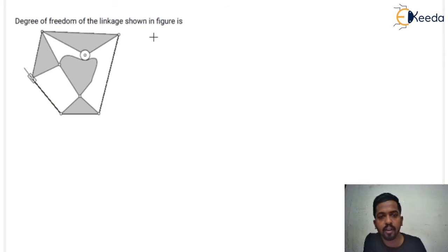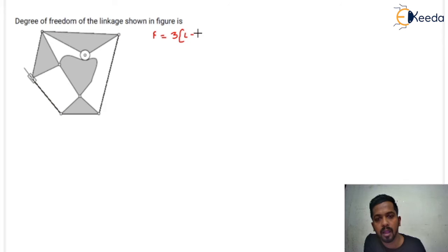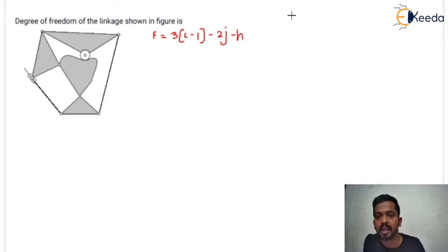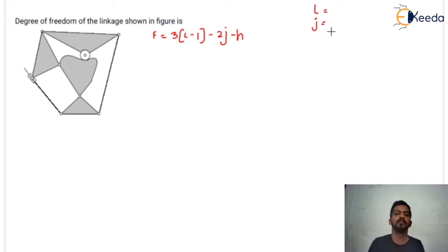For finding out the degree of freedom, first you have to know the formula of degree of freedom, that is: 3(L - 1) - 2J - H, where L represents the number of links and J represents the number of joints.